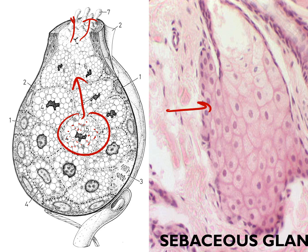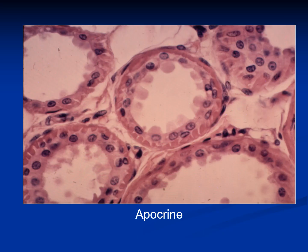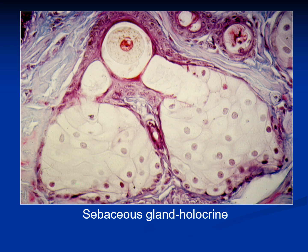To summarize the modes of secretion: in merocrine, there is no loss of any portion of the cell — product released by exocytosis. In apocrine, the apical portion is lost along with the plasma membrane. In holocrine, the entire cell dies and is released as the product — the only example being the sebaceous gland near the hair follicle, which has a very characteristic shape.